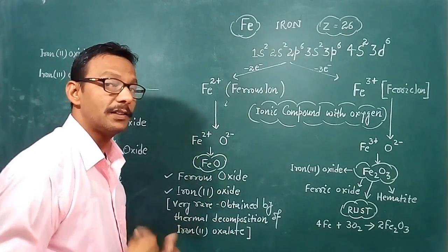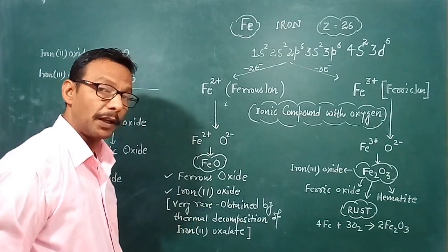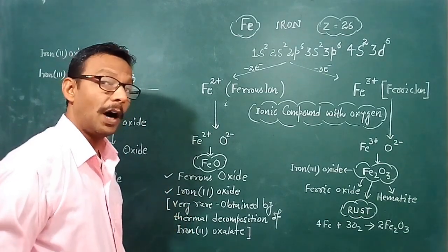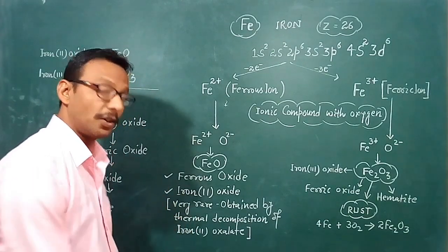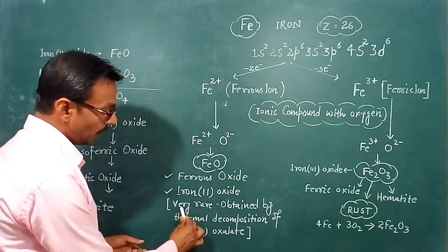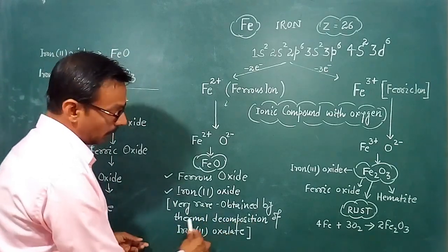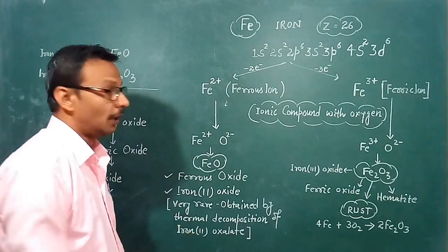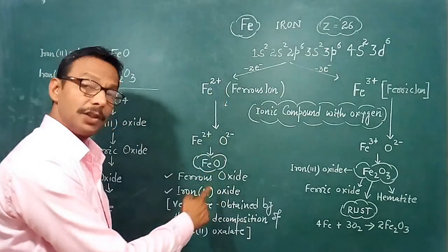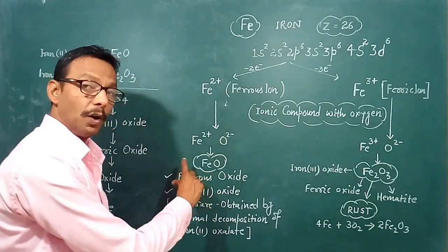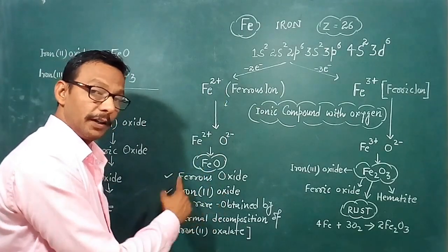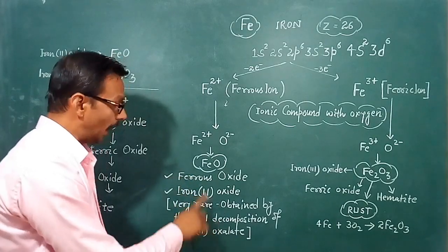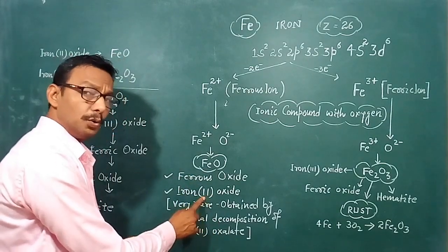FeO is very rare and is obtained by thermal decomposition of iron oxalate. It is called iron(II) oxide — iron 2 — because the valence of iron here is 2, meaning iron has two electrons to lose.